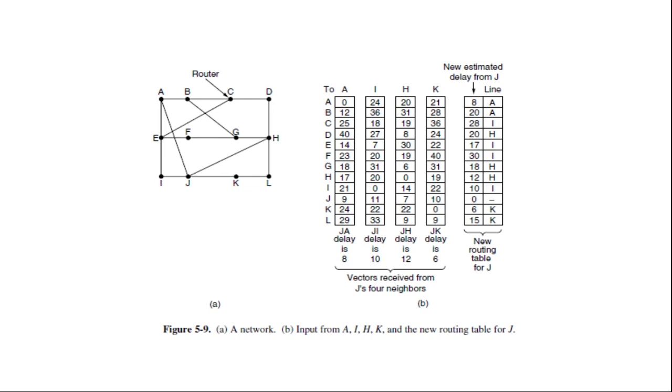Similarly, it computes the delay to G via I, H and K as 41, 31, and 18. 6 plus 12 and 37, 31 plus 6 ms respectively. The best of these values is 18. So it makes an entry in its routing table that the delay to G is 18 ms and that the route to use is via H. And the same calculation is performed for all the other destinations with the new routing tables shown in the last column of the figure. Here you can see the last column, new routing table for J.